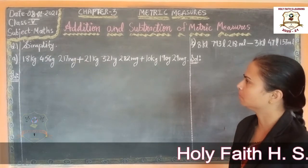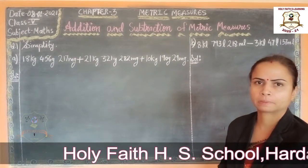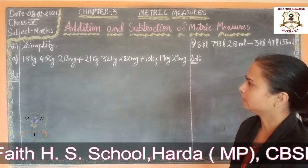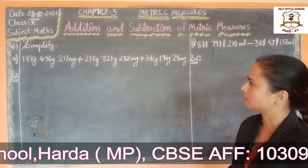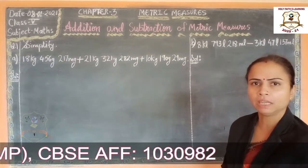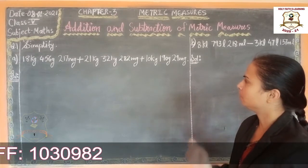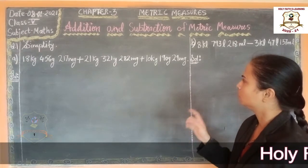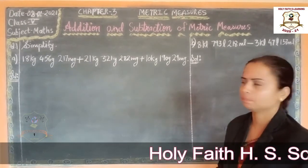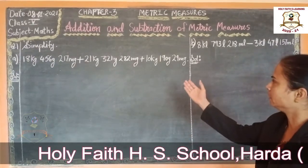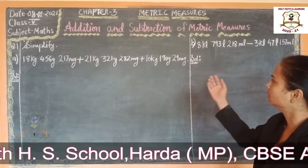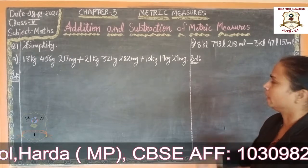Let's see question number 1, simplify. See here: 80 kg, 426 gm, 270 mg, plus 21 kg, 321 gm, 282 mg, plus 10 kg, 190 gm, 29 mg.